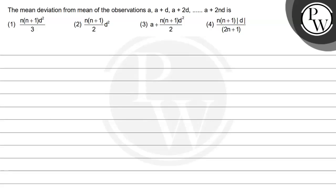Let's read the given question. The question states that the mean deviation from the mean of observations a, a+d, a+2d, and so on up to a+2nd is to be found. Option 1: n(n+1)/3 divided by d squared. Option 2: n(n+1) × d squared divided by 2. Option 3: a + n(n+1) × d squared divided by 2. Option 4: n(n+1) × |d| divided by 2n+1.